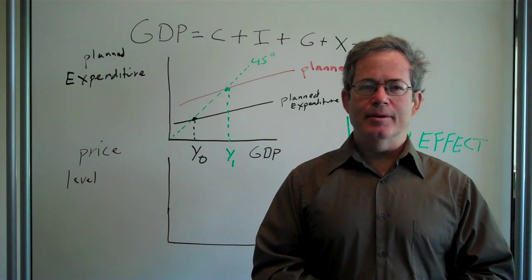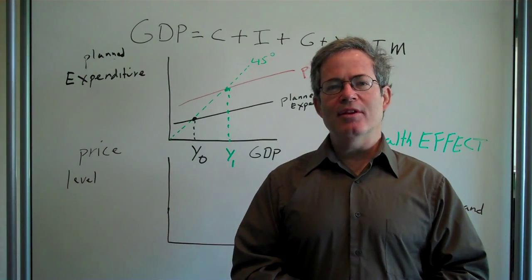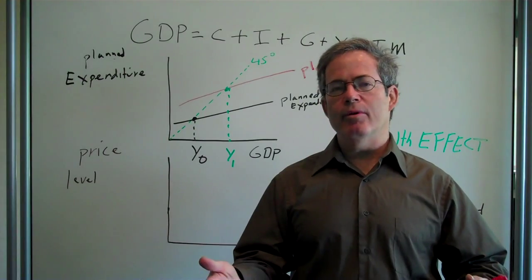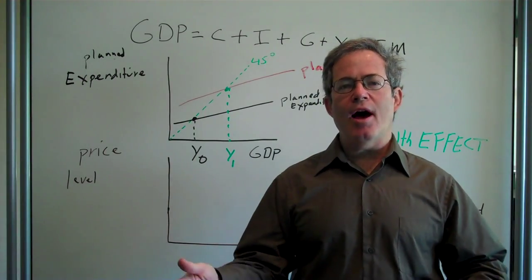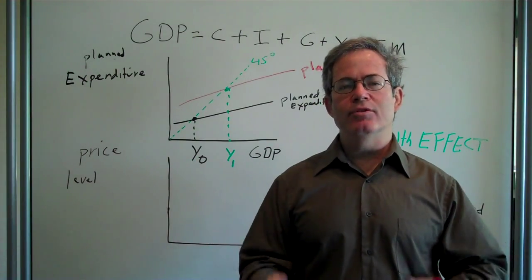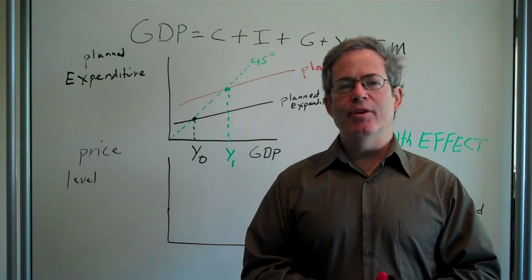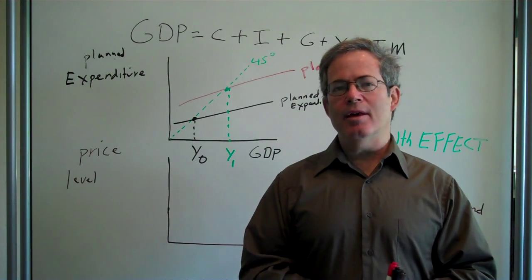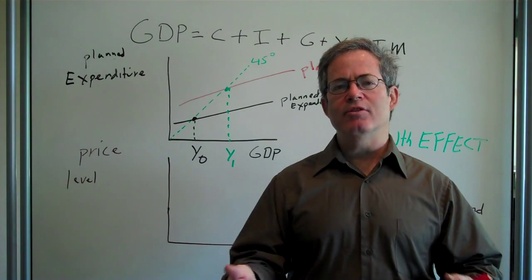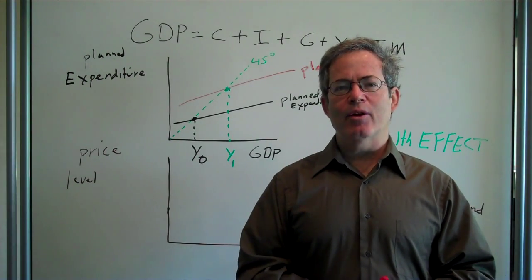Let's start with aggregate demand. Aggregate demand shows the relationship between the price level—that is, how much things cost on average for the whole economy—and the total aggregate demand on the other hand. So the relationship between the price level and aggregate demand.